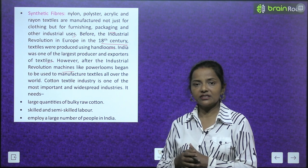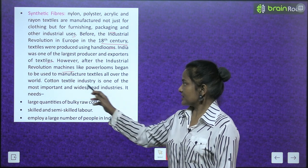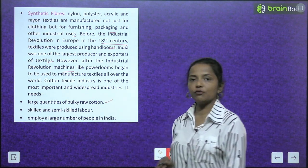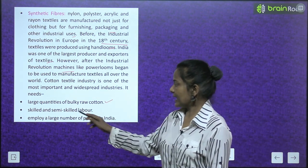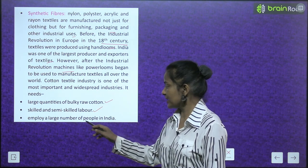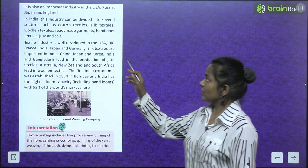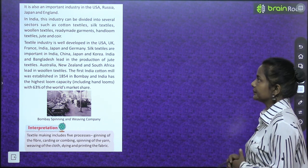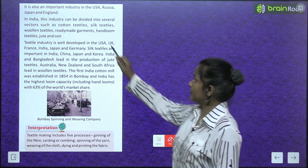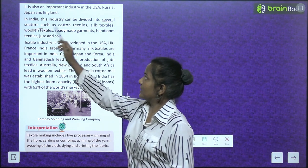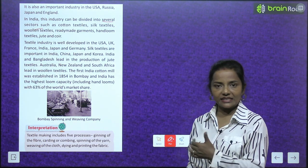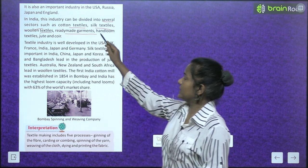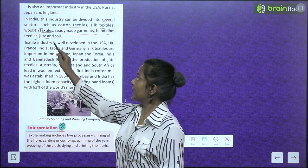Cotton textile industry is one of the most important and widespread industries. It needs large quantities of bulky raw cotton. Skilled and semi-skilled labour employ a large number of people in India. It is also an important industry in the USA, Russia, Japan and England. In India, this industry is divided into sectors such as cotton textiles, silk textiles, woolen textiles, ready-made garments, handloom textiles, jute and coir.